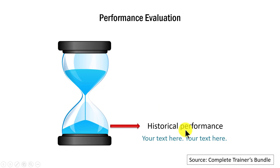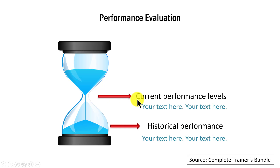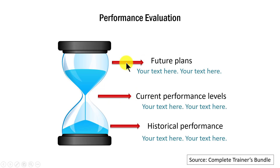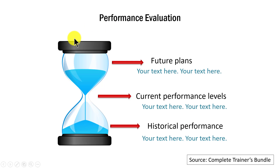Another idea is to use a metaphor which shows three different times: this is the historical performance, this is the current performance, and this is the future plans. And you can see that all these without the context of this beautiful graphic would mean nothing. But with this graphic in place, you now have a very interesting way to communicate your past, current situation and your future plans. It's a very nice way to present your timeline slides.